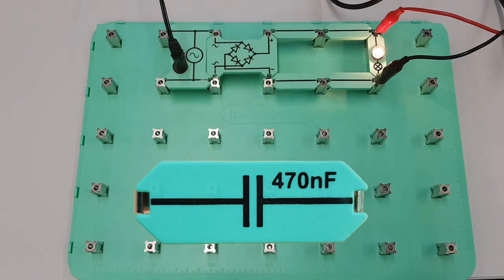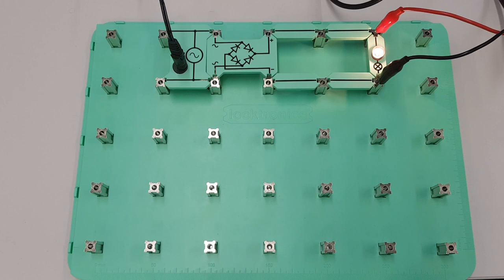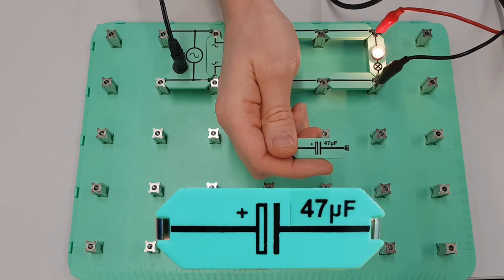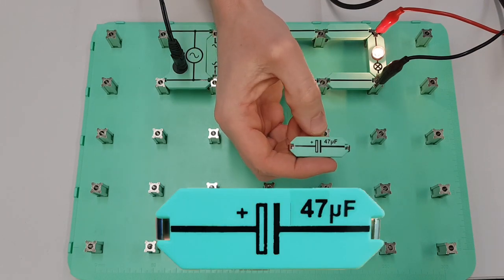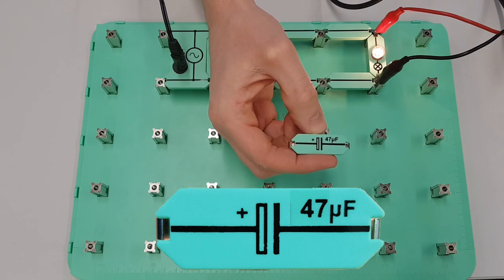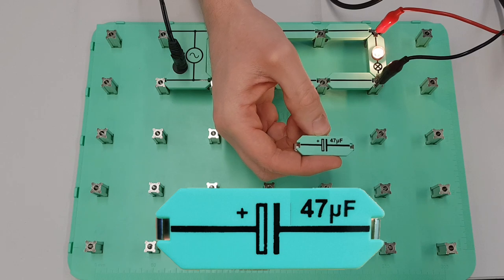We're going to introduce a slightly larger value of capacitor here. So here we've got a 47 microfarad capacitor. Now you'll notice the symbol is ever so slightly different, and that's because this is what's called an electrolytic capacitor, and we've got to be careful about how we connect this and the polarity of this.